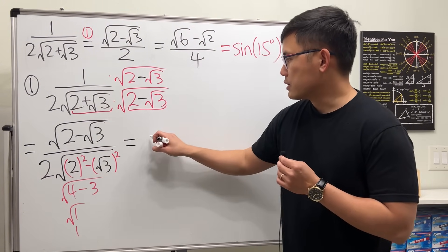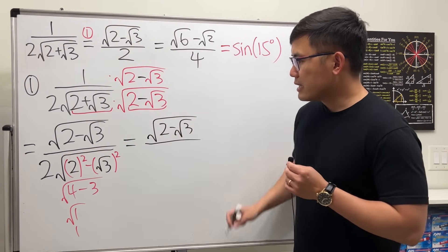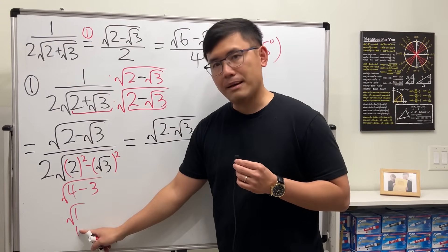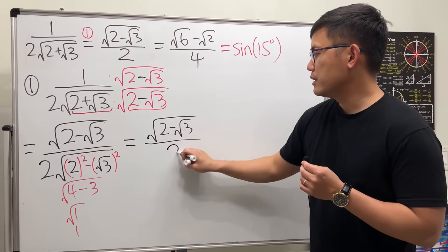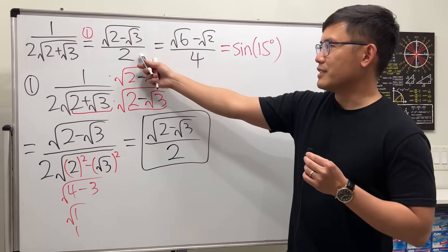So as we can see, the top is square root of 2 minus square root of 3. And the bottom is just 2 times 1, which is just a 2. So as we can see, this is indeed the same as that.